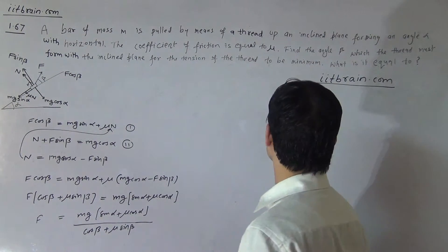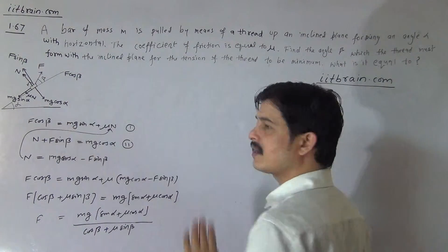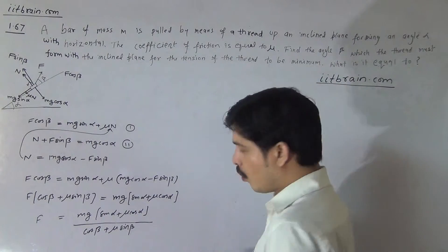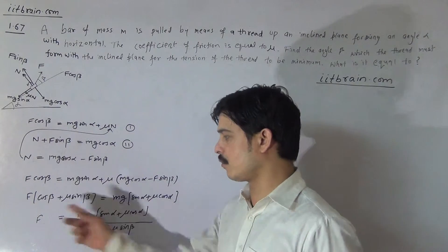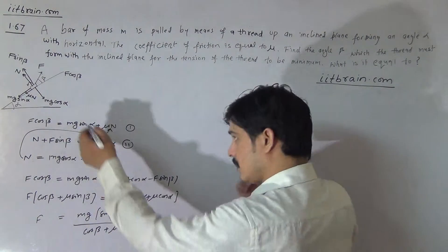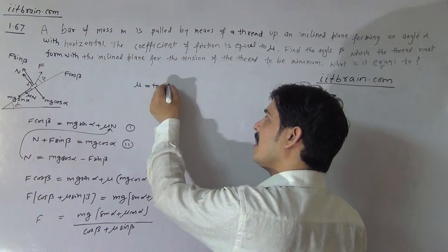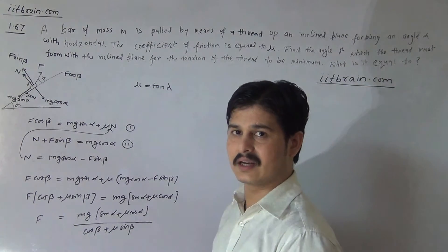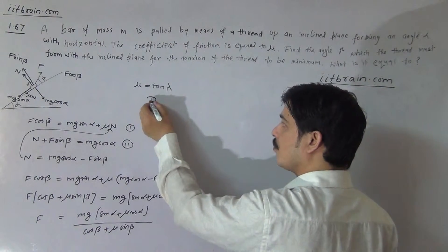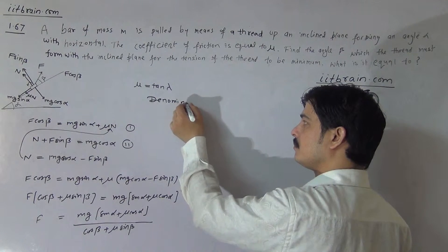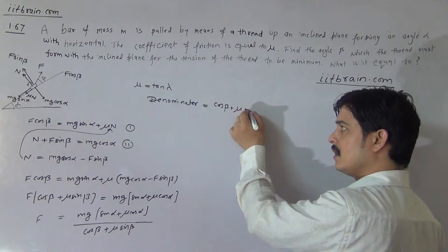Since alpha is the angle of inclination and is a fixed value, only beta can be changed. We need to find the value of beta for which F will be minimum. We use the concept that the friction coefficient of the surface equals tan lambda, where lambda is the friction angle: mu equals tan lambda.